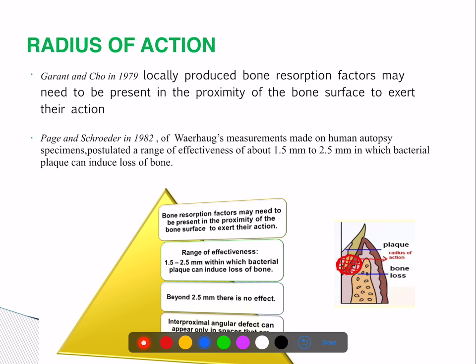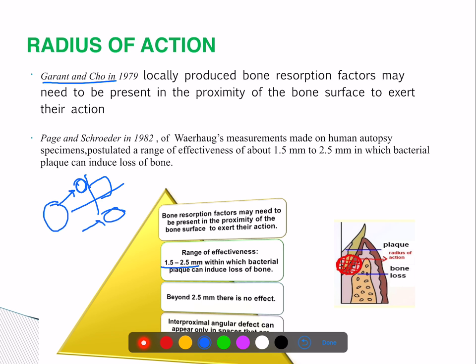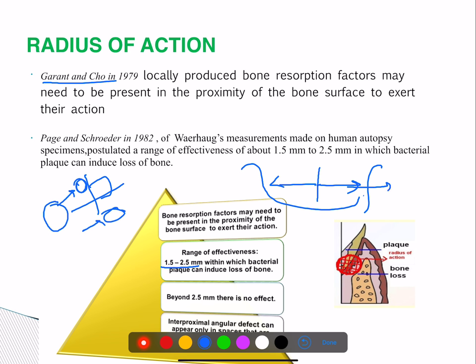The radius of action is a concept given by Grant and Shaw in 1979, which means that bacteria and their toxins must be in proximity with the bone. They must be very close to the bone — the diameter is around 1.5 to 2.5 millimeters. If the bacteria is here, it can only affect the area 1.5 to 2.5 mm around it; anywhere outside that range would be healthy.